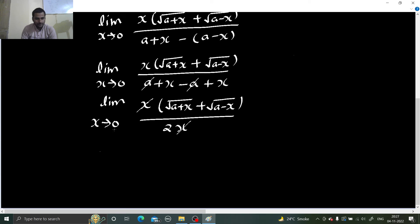So when I put 0 here, putting x equals to 0, we are going to get under root a plus 0 which is under root a only and again under root a divided by 2. So this is nothing but 2 root a divided by 2 which is going to give you under root a as your final answer.